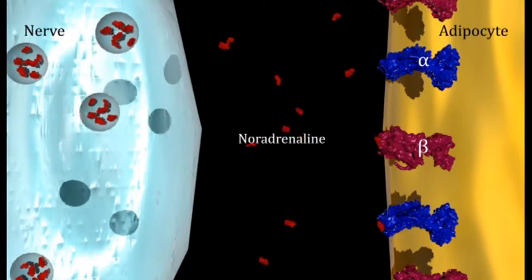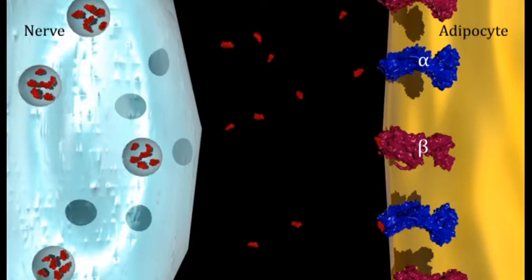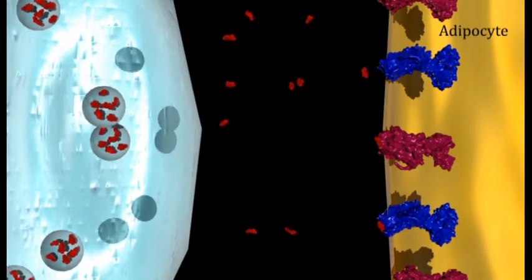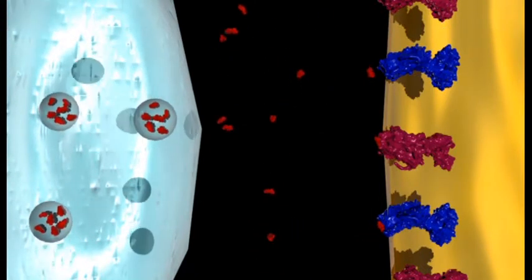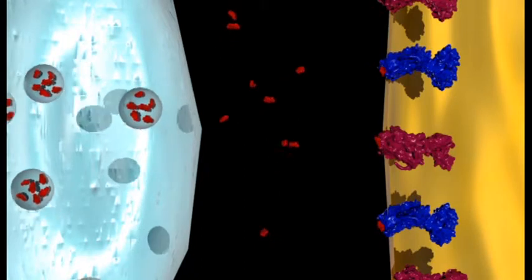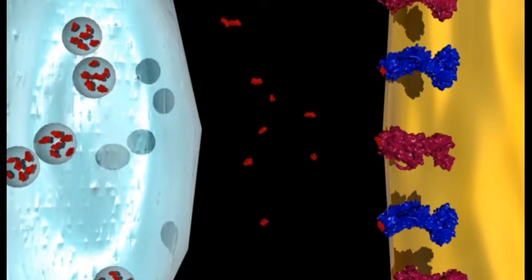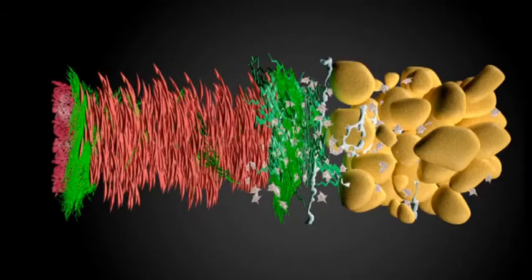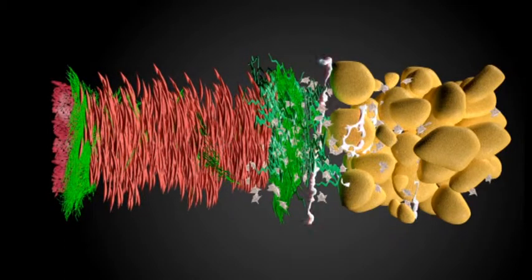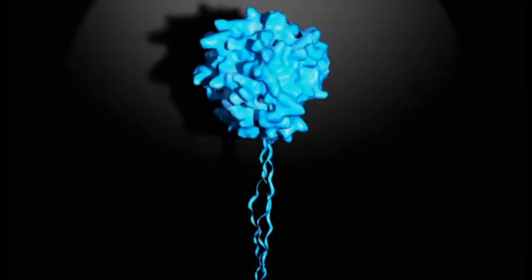Our hypothesis suggests that release of two of the many adipocyte-specific adipokines can be modulated by the action of the sympathetic neurotransmitter noradrenaline, acting on alpha and beta adrenoreceptors on the surface of the adipocytes.